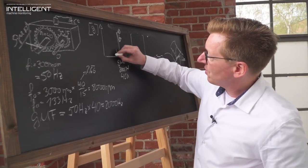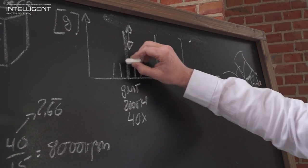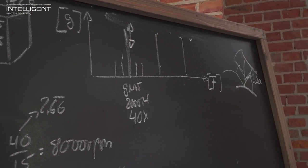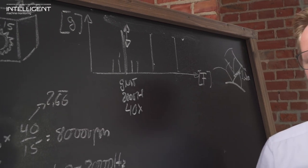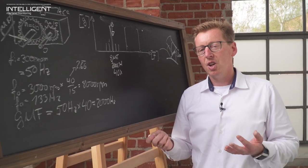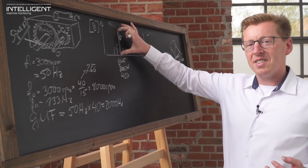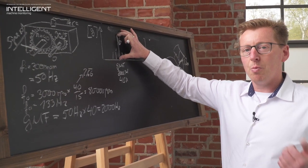You will produce sidebands to the main gear mesh frequency around this main peak, and these are an indication for the quality of the mating or the quality of the contact. So the amplitude of the gear mesh frequency peak is an indicator of the quality of lubrication